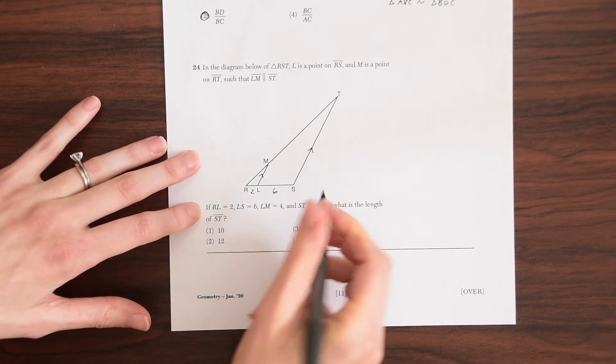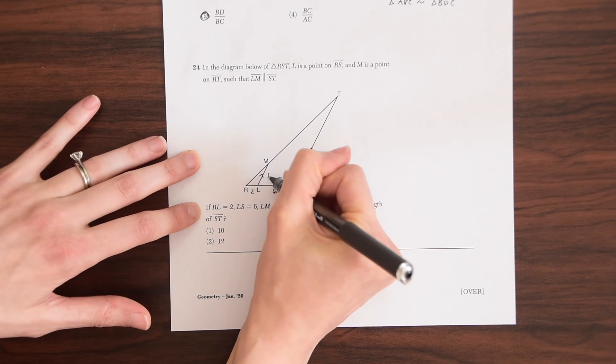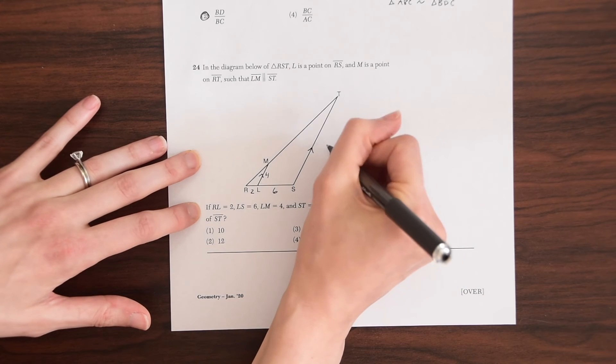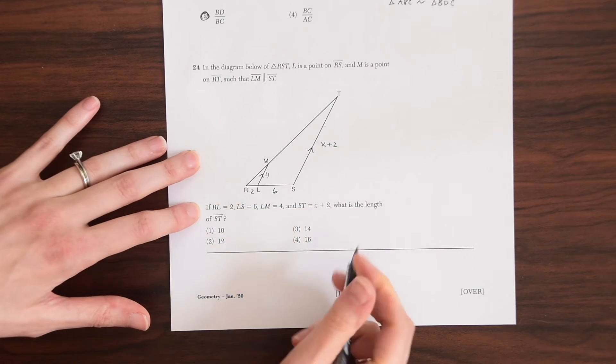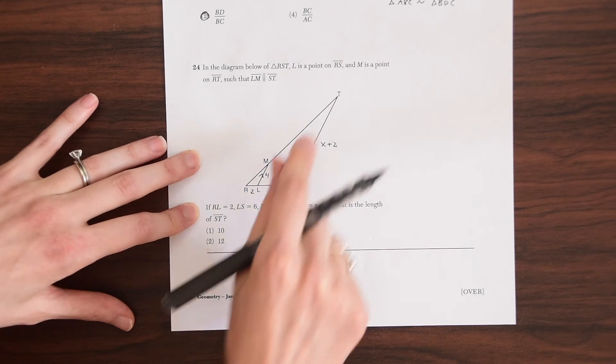So we have RL is equal to two, LS is equal to six, LM along here is equal to four, and then ST is equal to X plus two. What is the length of ST? So we want to find the value of this entire length here.